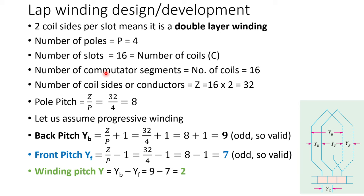We need to calculate the pole pitch. Total number of coil sides divided by the number of poles gives us the pole pitch equal to 8. Let us assume that it is a progressive winding. So back pitch would be given by Z/P plus 1, or pole pitch plus 1. If we assume retrogressive winding, the signs in back pitch and front pitch will get reversed. So back pitch would be equal to 9, and it is an odd number so it is valid for lap winding. Front pitch is Z/P minus 1, equal to 7, which is also odd so it is valid. Winding pitch would be back pitch minus front pitch for lap winding, so winding pitch YB minus YF would be equal to 2.